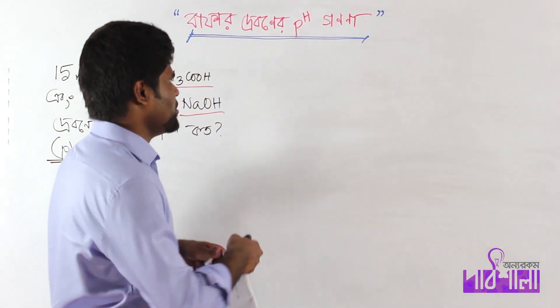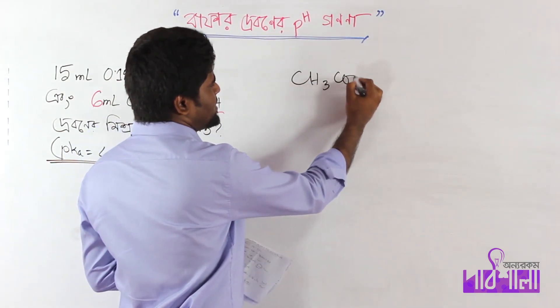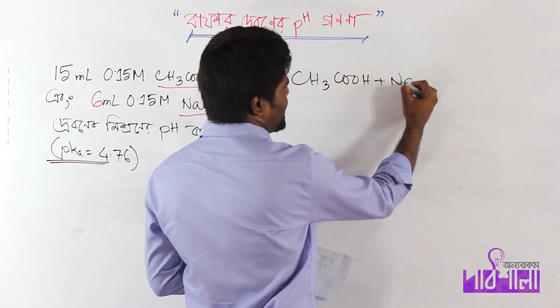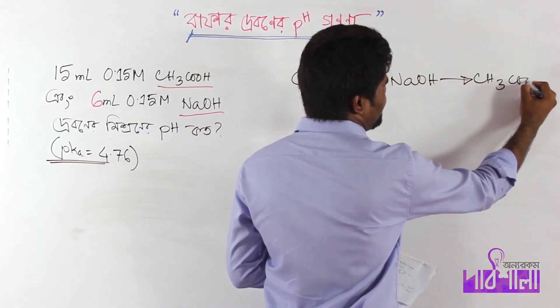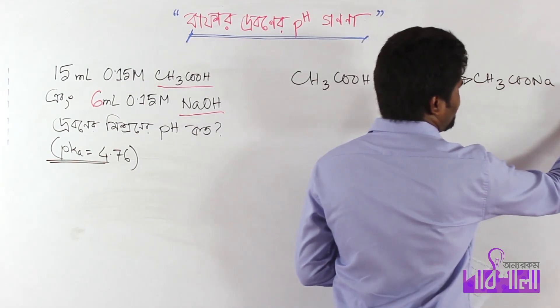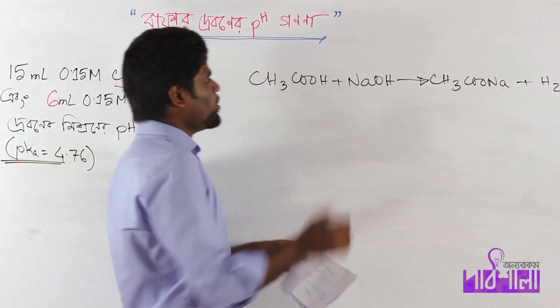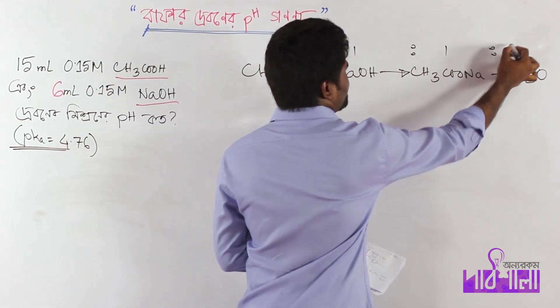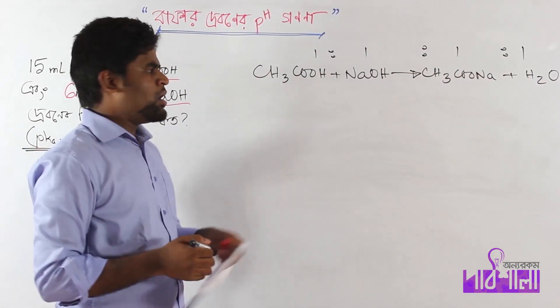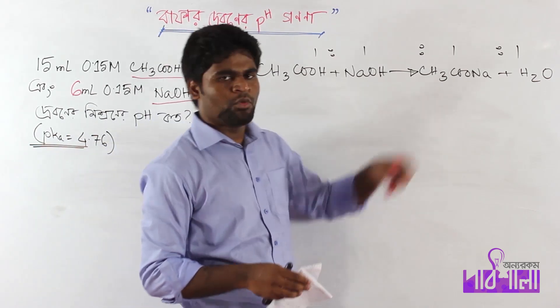CH3COOH and NaOH - acetic acid and sodium hydroxide. If you write the formula, the ratio is 1 to 1 to 1 mol. This means that 1 mol acid reacts with 1 mol base to produce 1 mol salt.